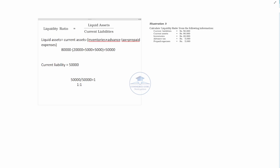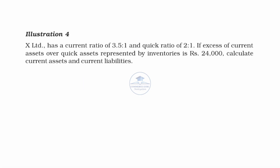Now we move to Illustration 4. X Limited has a current ratio of 3.5 is to 1 and a quick ratio of 2 is to 1. The excess amount of current assets over quick assets is represented by inventories. That is why current assets minus quick assets gives us inventories.